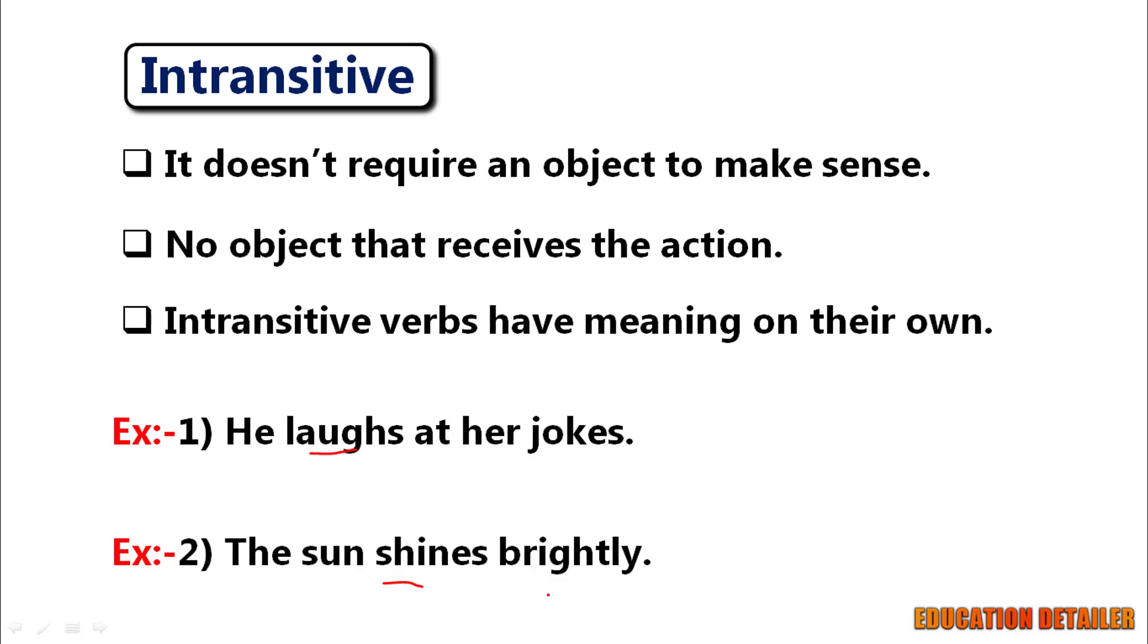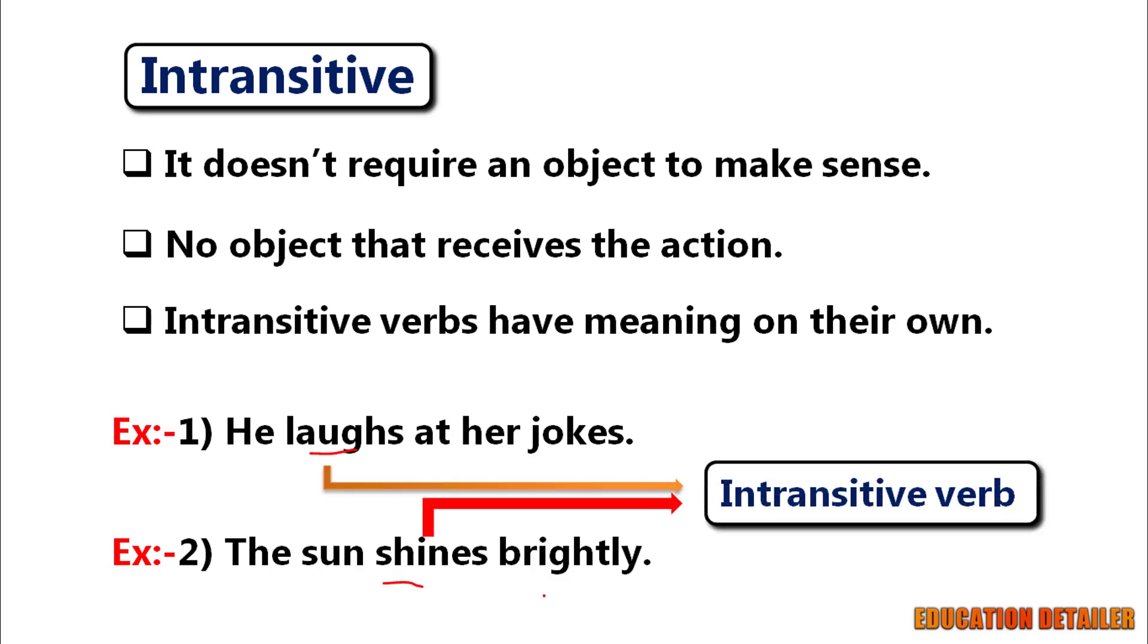When we ask here what or whom, like in the case of transitive verbs, we don't get any answer. Because there are no objects here. So these are called intransitive verbs.